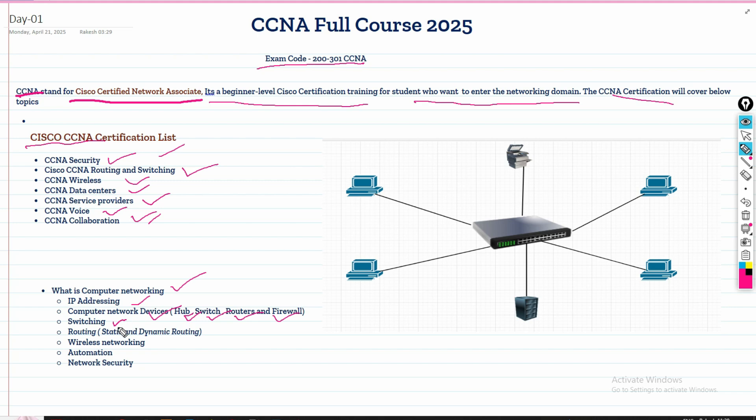Then we'll see switching L2 and L3 switches. Then we'll see the routing part: static routes and dynamic routing protocols including OSPF, RIP, and EIGRP. Then we'll learn wireless networking, automation, and after that we'll see network security. These topics will be covered in this series one by one.